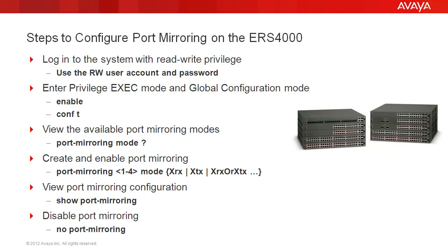We'll go through these steps to configure port mirroring on the EIS 4000. First, we log into the system with rewrite privilege using the RW user account and password. Then, we enter the privilege exec mode and the configuration mode using enable and conf t. To view all of the available port mirroring modes, we use the following command: port mirroring mode followed by a question mark.